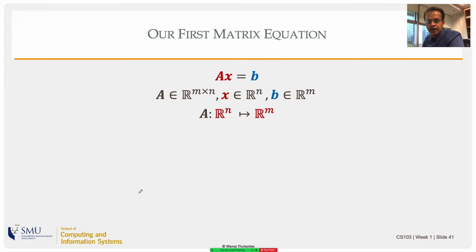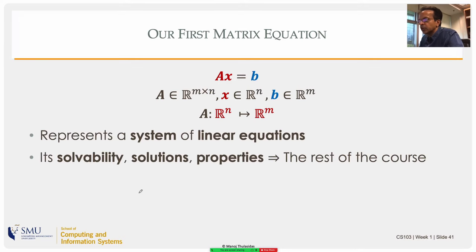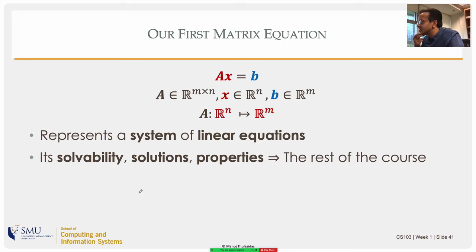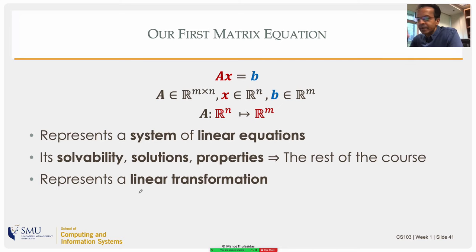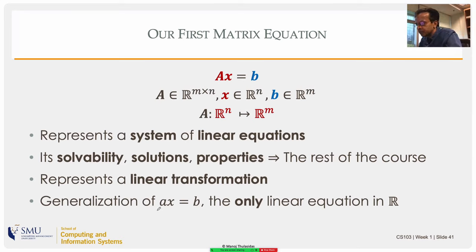In general, x ∈ ℝⁿ; our matrices are members of ℝᵐˣⁿ (m rows, n columns). When I write Ax = b: x is a collection of n unknowns, and each row of A translates into one equation, so we have m equations and n unknowns. So Ax = b is notation for a system of m linear equations in n unknowns. A ∈ ℝᵐˣⁿ, x ∈ ℝⁿ, b ∈ ℝᵐ. So A is a mapping from ℝⁿ to ℝᵐ — this represents a system of linear equations.